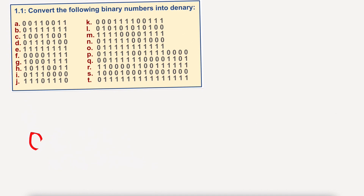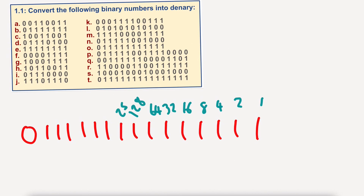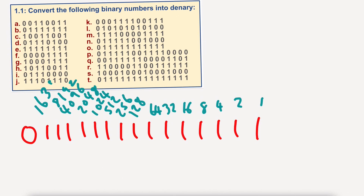Now if I do the bottom one, the binary digits are 0, 1, 1, 1, 1, 1 — positions 7 through 15. Let's label them up: 1, 2, 4, 8, 16, 32, 64, 128, 256, 512, 1024, 2048, 4096, 8192, 16384. Ridiculous numbers.